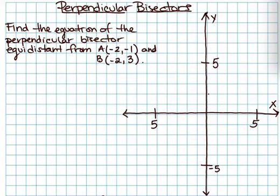Negative 2, negative 1 is A, and negative 2, 3 is B.